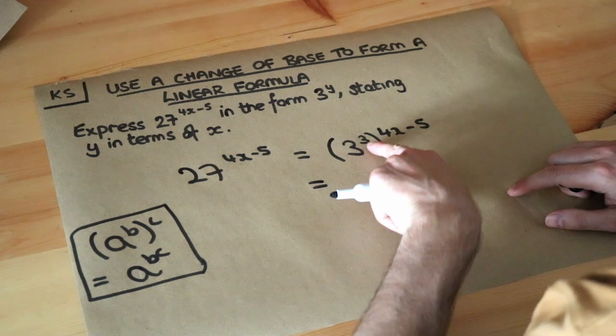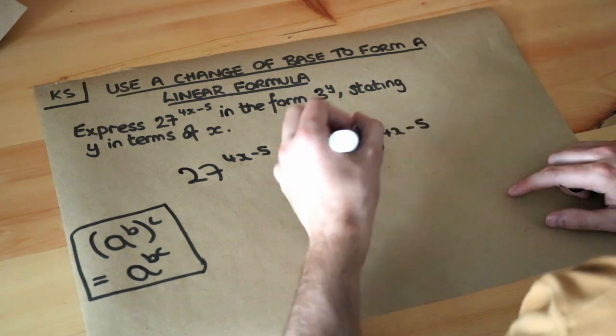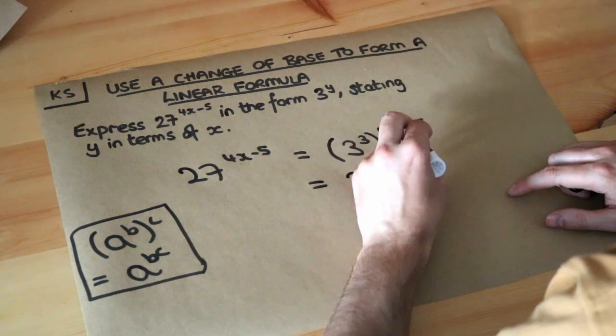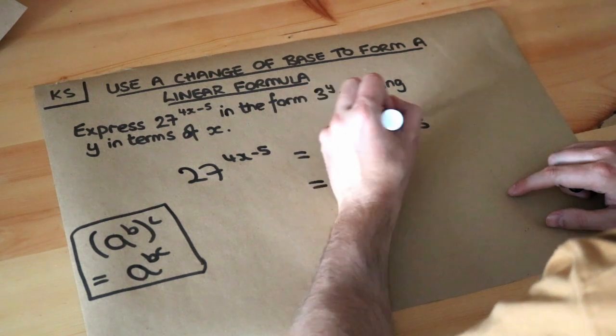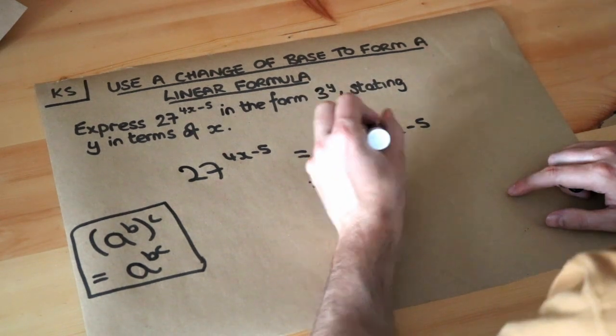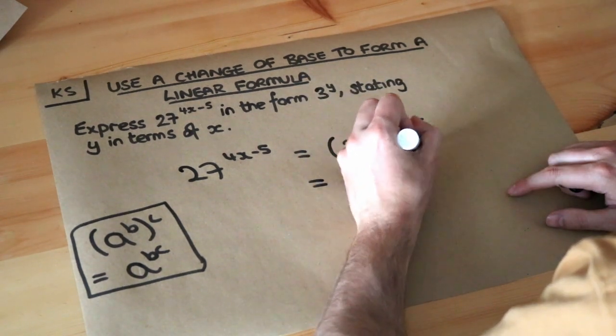So we just need to times the 3 and the 4x minus 5 together. 3 times 4x minus 5, well 3 times 4x is 12x. 3 times minus 5 is minus 15. So we get that.